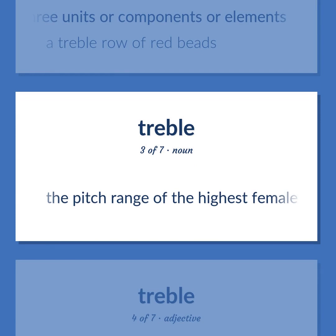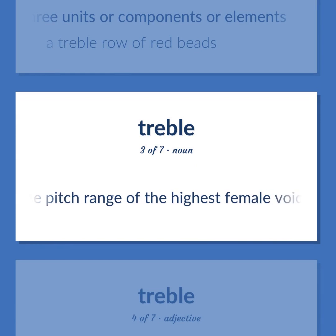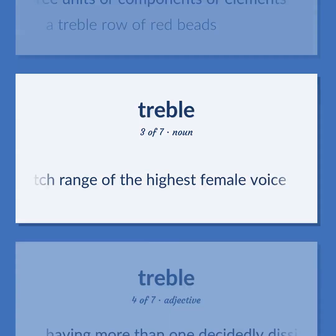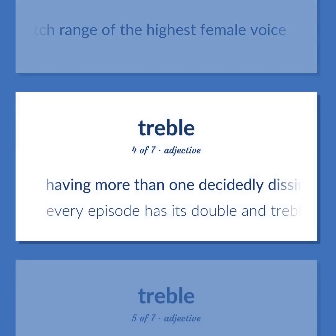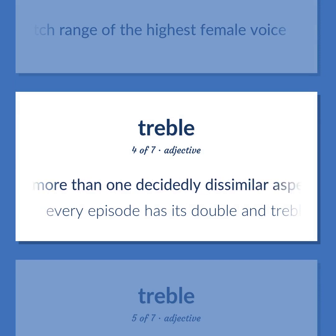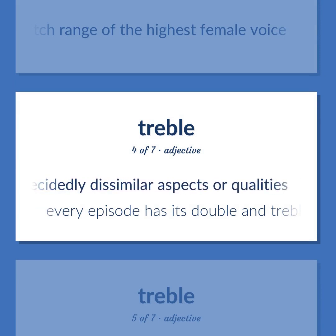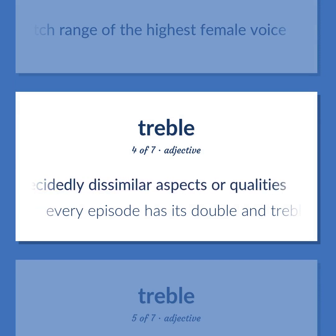Treble: The pitch range of the highest female voice. Having more than one decidedly dissimilar aspects or qualities. Example: Every episode has its double and treble meaning.